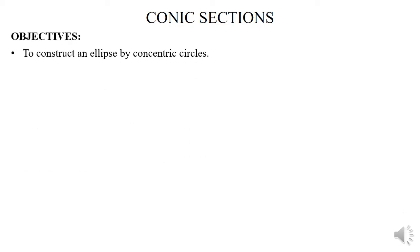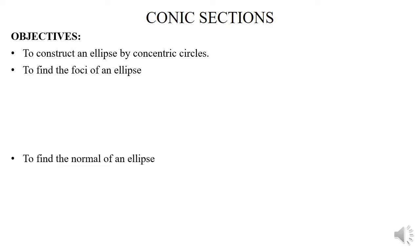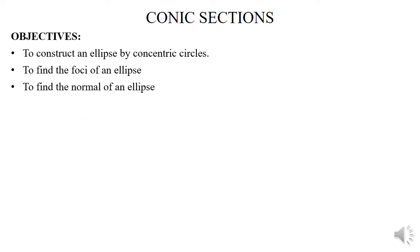Welcome to this lecture on conic sections. There are basically four types of conic sections: the hyperbola, the parabola, the circle, and the ellipse. This video specifically concentrates on the ellipse. The objectives are: construct an ellipse by concentric circles, find the focus of an ellipse, find the normal of an ellipse, and find the tangent of an ellipse.